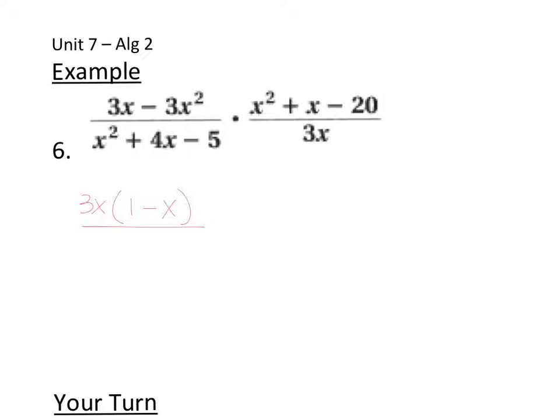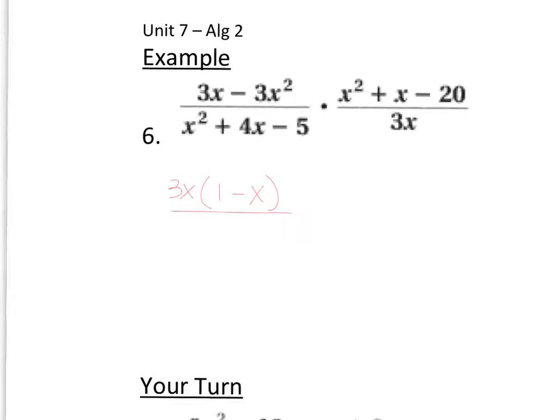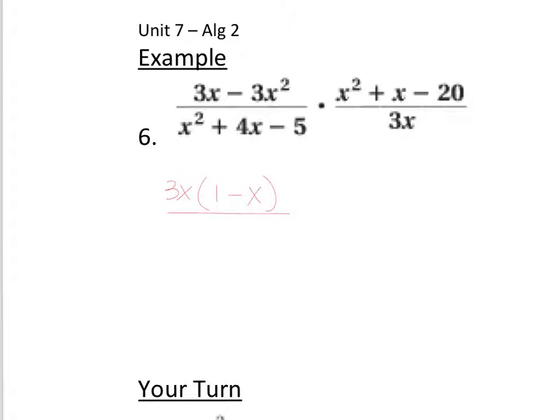If I want to simplify the bottom, I need to be able to factor it. So I have x² + 4x - 5, and to factor this, we can do the diamond method. So I'm going to move over here and complete the diamond method.